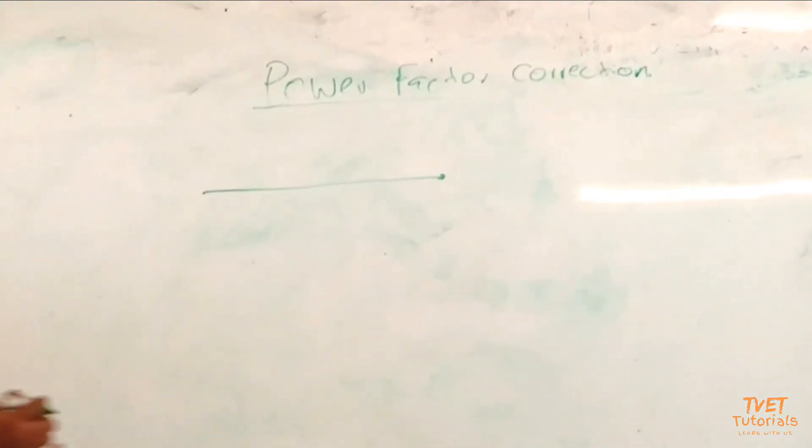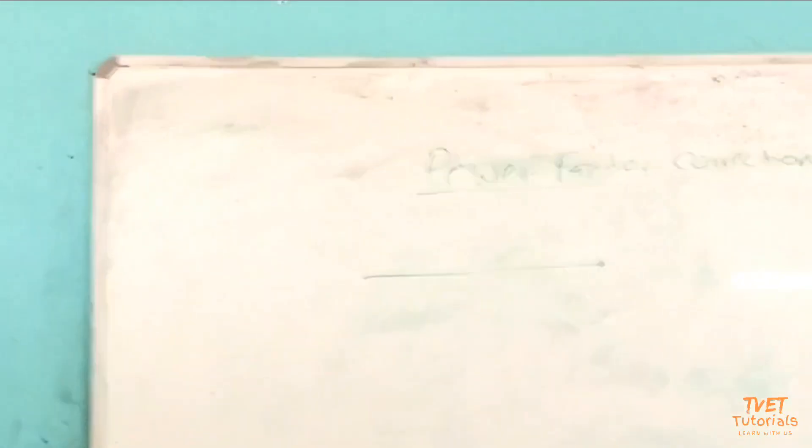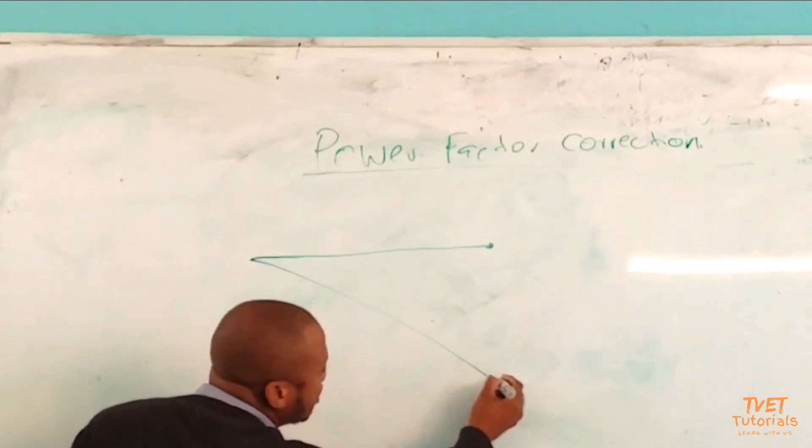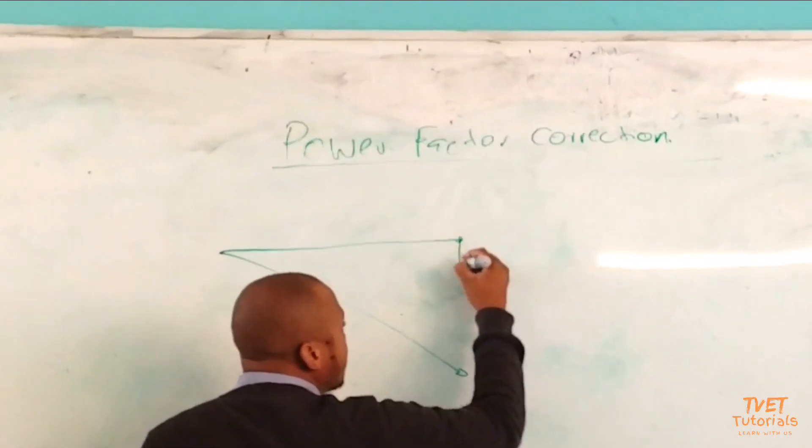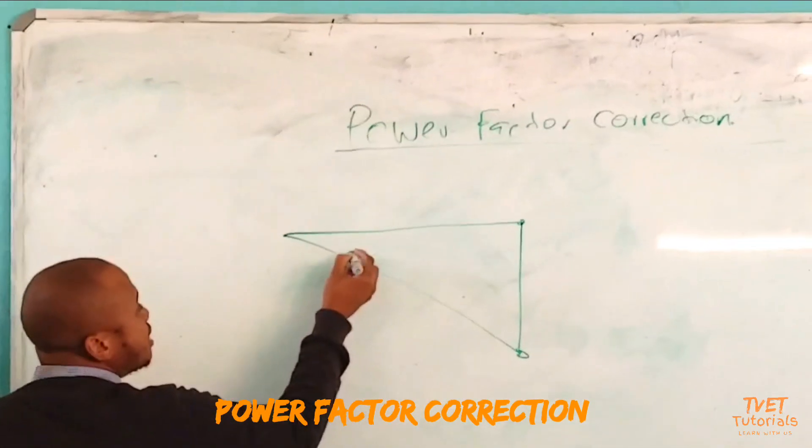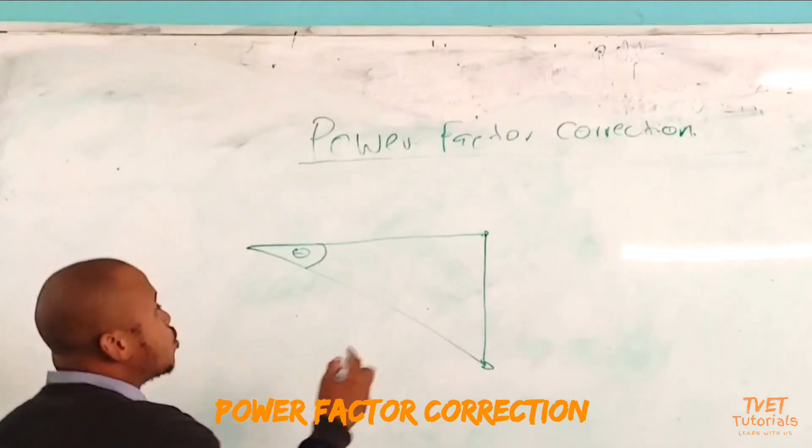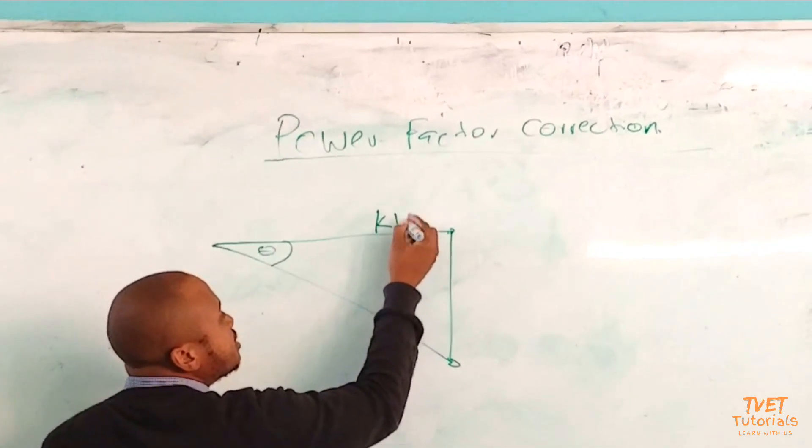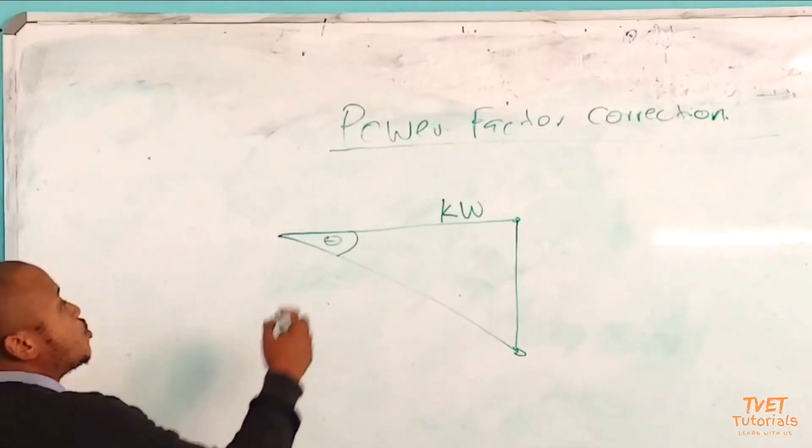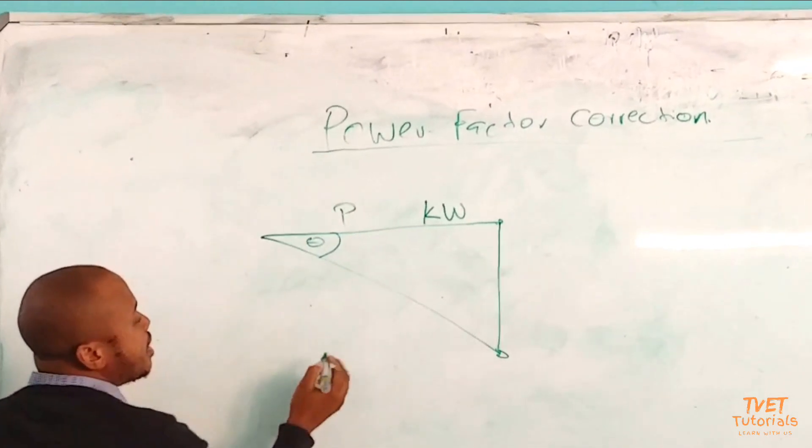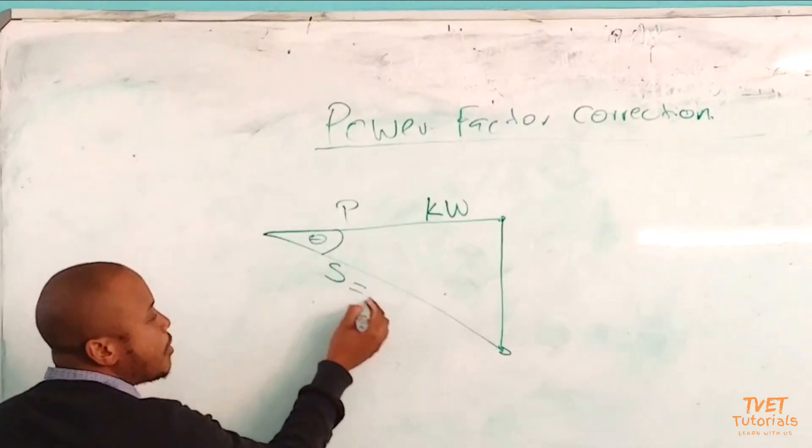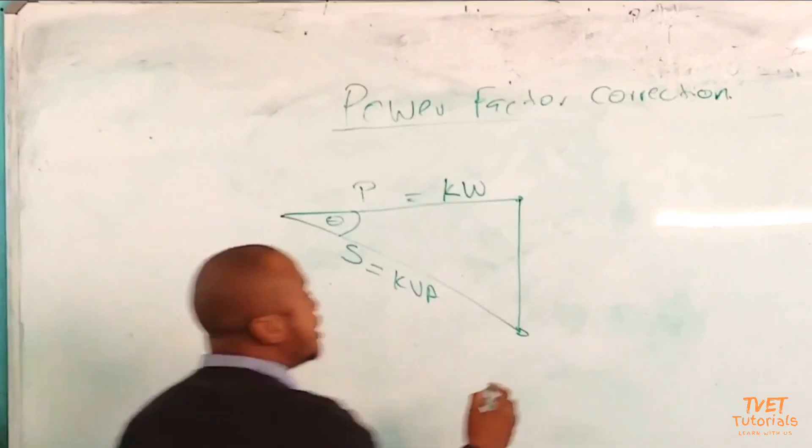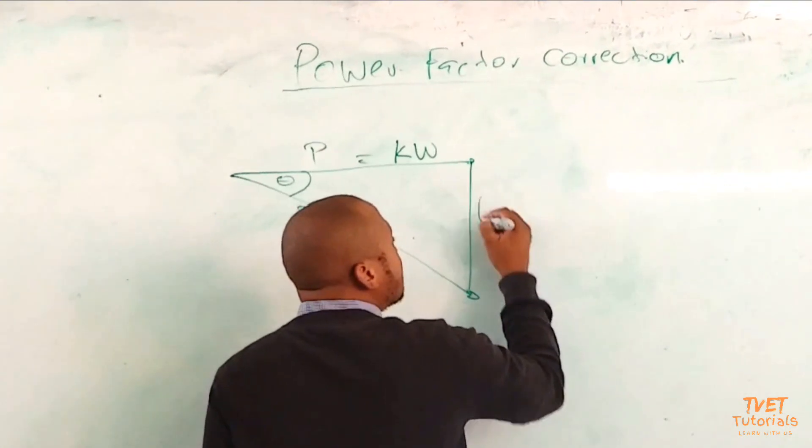Obviously for the power chain tends to be poor, it means I must have a lag on power chain. So my S will be somewhere there, and my Q will be something like that. And this angle, all the data will be given. So we know that this represents the true power, which is represented in kilowatts.